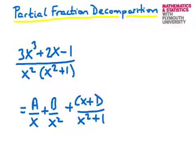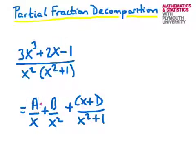We're then going to put these terms on a common denominator, which will be, by construction, this denominator here — the original one. Then we will compare the effective numerator on the right-hand side with the original numerator, and in that way determine the constants a, b, c, and d.